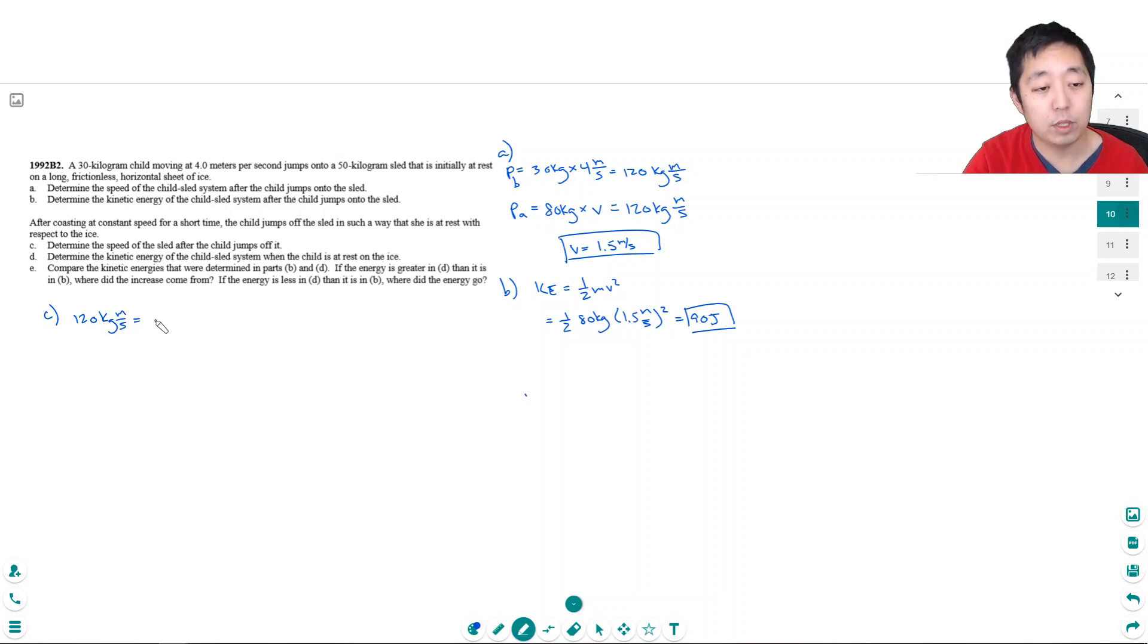But now it's all the sled, so it's 50 kilograms times V, because the child's no longer moving. So that tells me the sled's velocity is 120 over 50, and that's 2.4 meters per second.